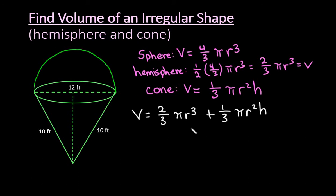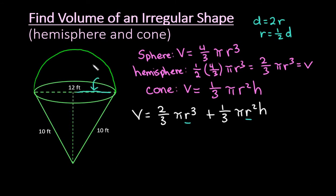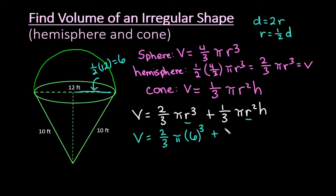Now we need to find the information to plug in. Both formulas require the radius. Since our diameter is 12 feet, and the radius is one half of the diameter, we take half of 12, which gives us a radius of 6 feet. So we can plug 6 in for r in both formulas.